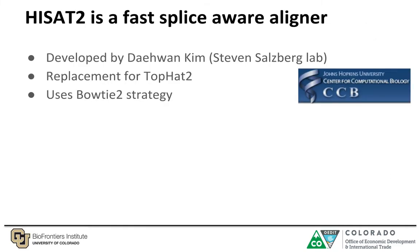HISAT2 is a fast splice-aware aligner that was developed in the Salzberg lab at the Center of Computational Biology at the Johns Hopkins University. It is meant to be a replacement of TopHat2 and uses a Bowtie2 strategy.